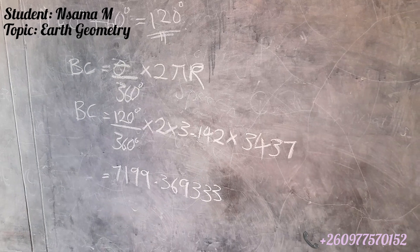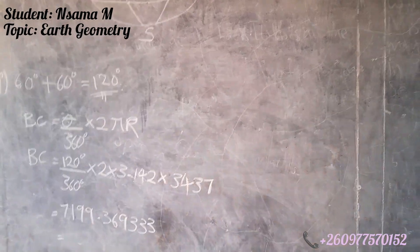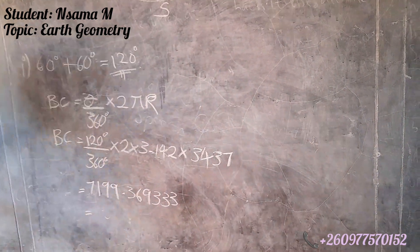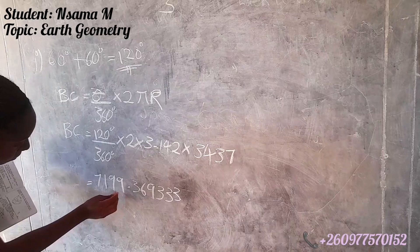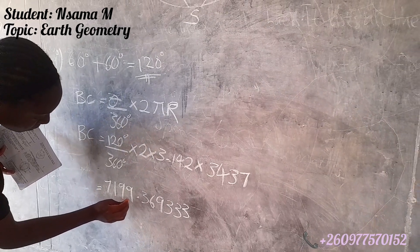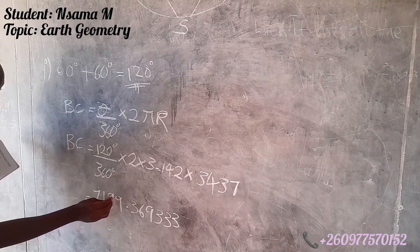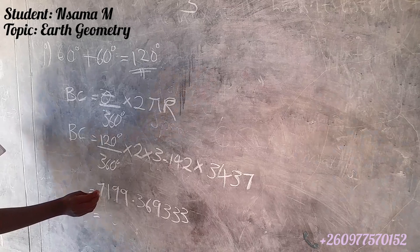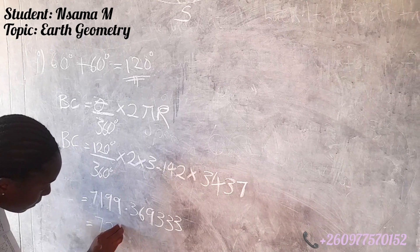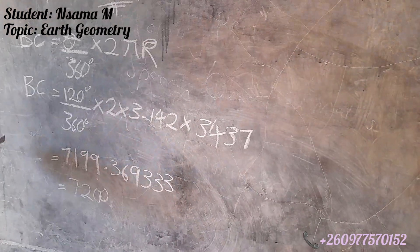Now we are going to express it in significant figures. We give a 1 to this digit, it becomes 10, so it'll be 0, and we carry the 1, making it 2. So it becomes 720. This is our answer.